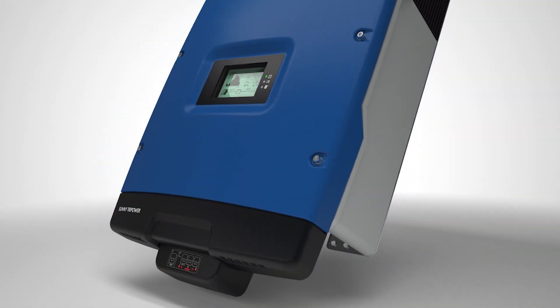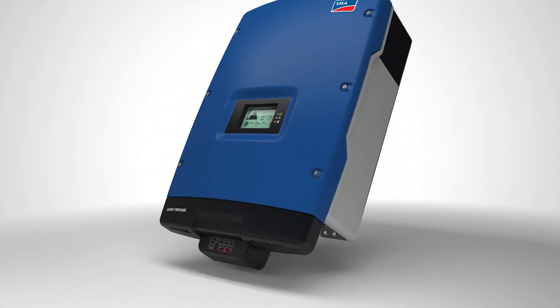The new SMA Sunny TriPower in power classes from 5 to 9 kilowatts. This three-phase inverter provides an easy system design with a DC input range of 370 to 800 volts and a maximum input of 1000 volts.